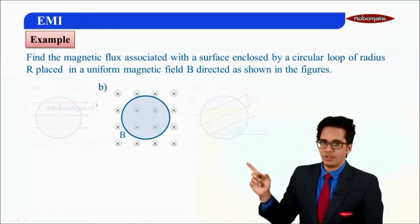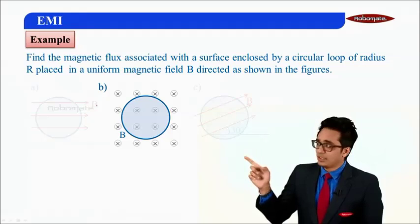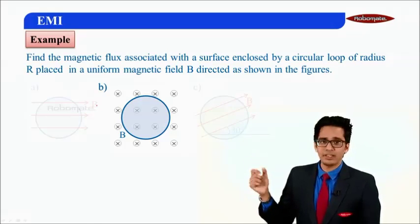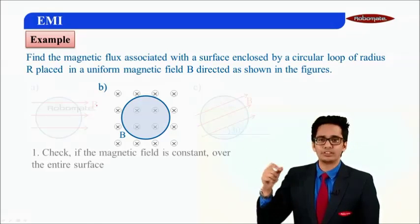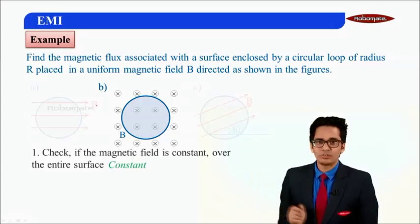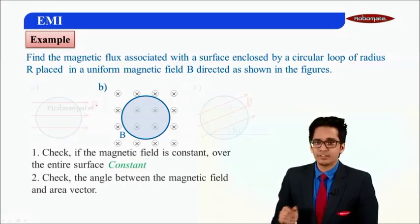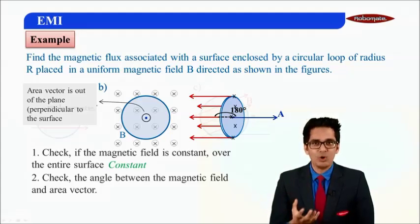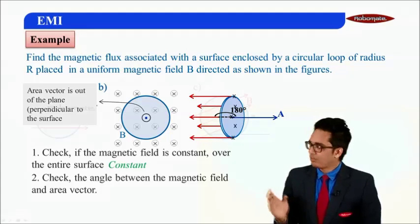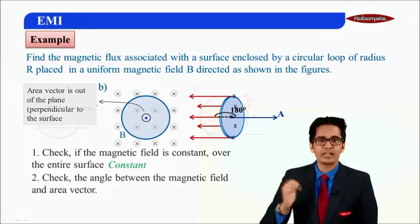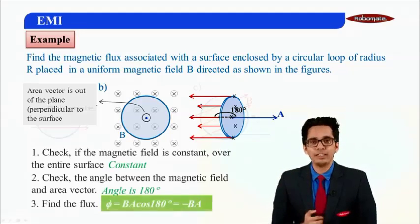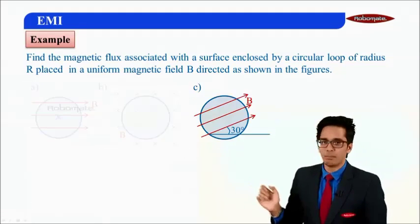Let us take this next situation. The magnetic field lines are inside the plane, and the area vector can be taken outside or inside. B is constant over the entire surface. The angle between B and the area vector is either 180° or 0° depending on how you take the area vector. If the area vector is taken opposite to B, the angle is 180°, so flux = BA cos 180° = −BA.